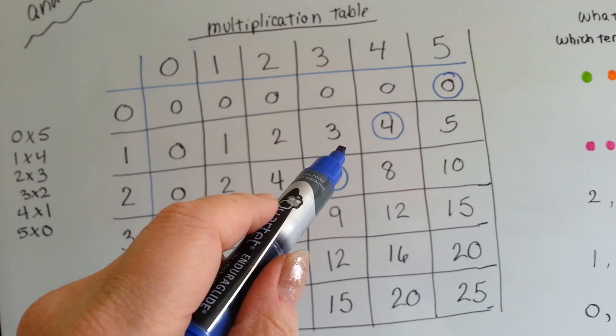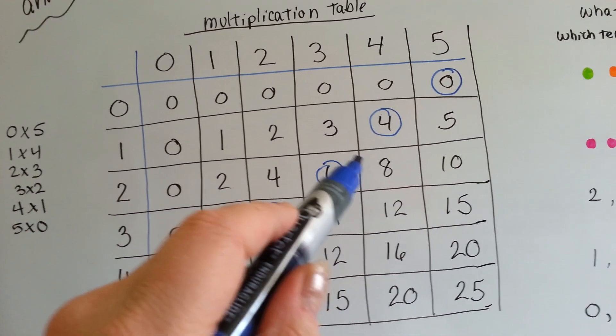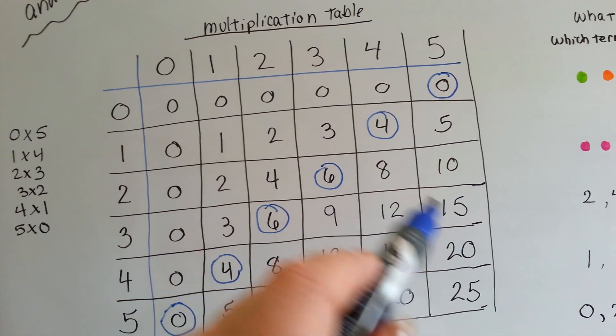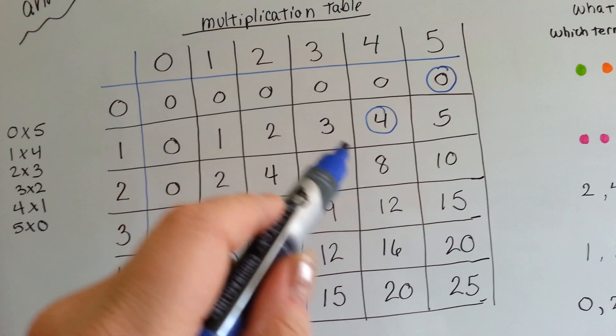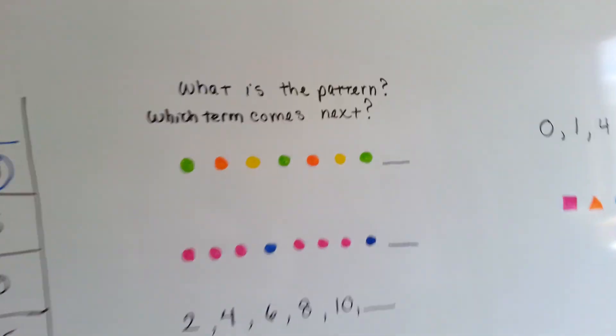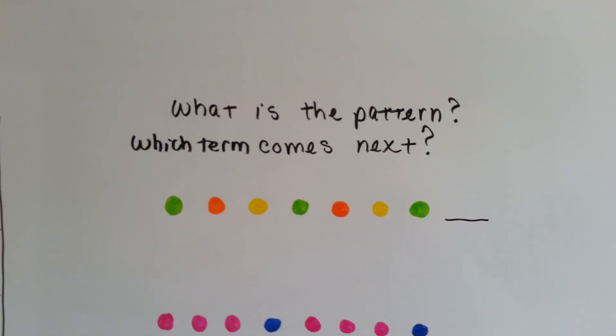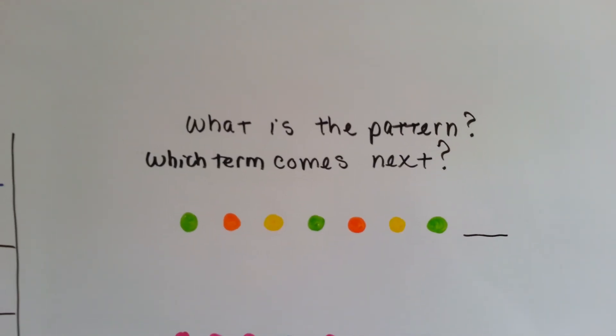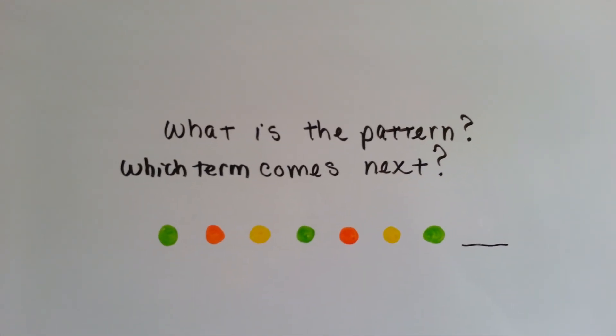So 3, 5. What would be the next odd number? 7. 8 plus 7 is 15. So do you see how I add the next odd number, and it's coming down, isn't it? So, knowing that, what do you think comes next? What's the next term in this pattern? Can you tell?